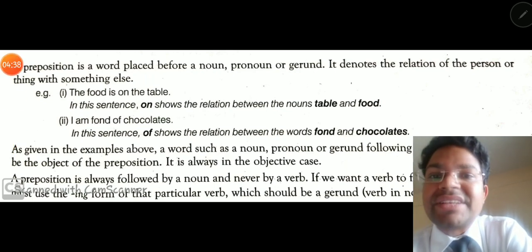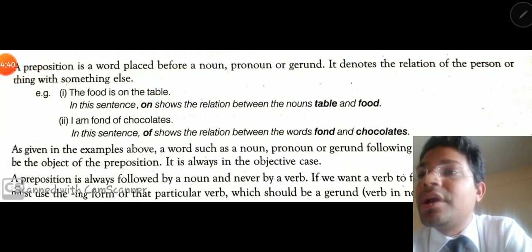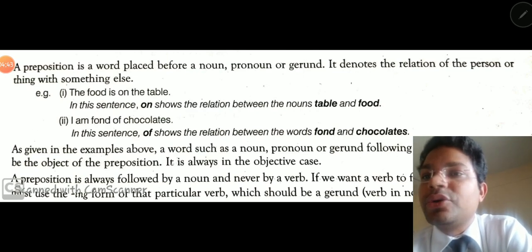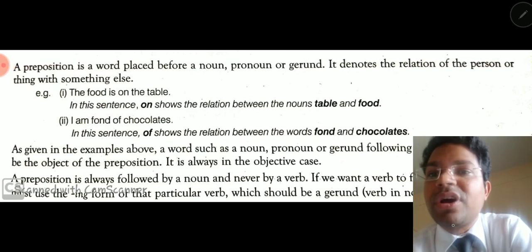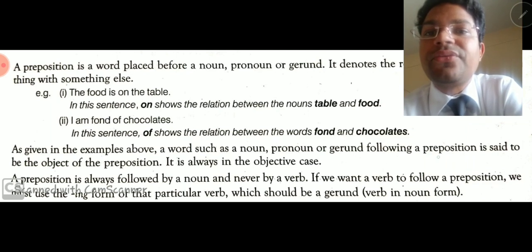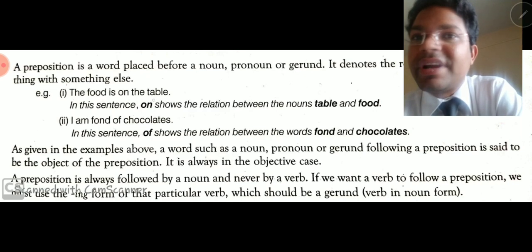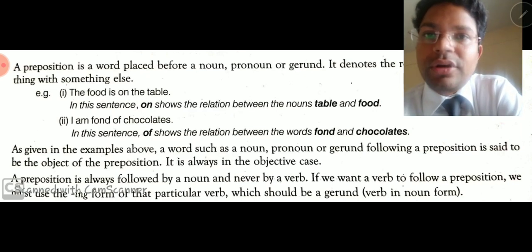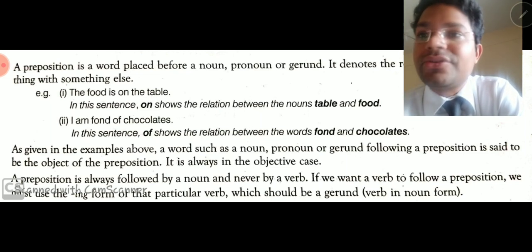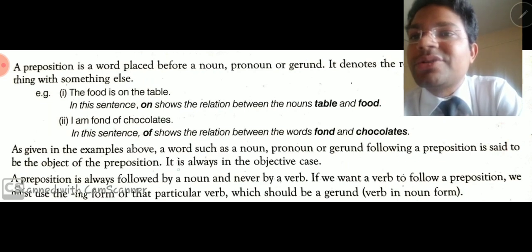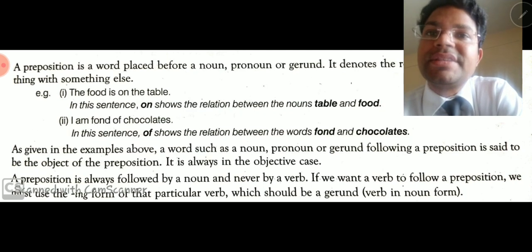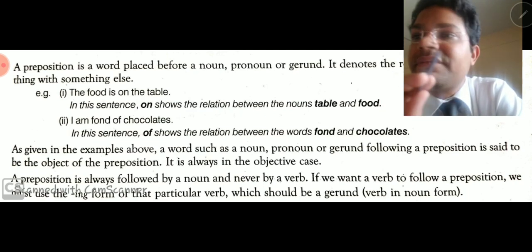Now some extra information: as given in the definition and examples above, a word such as a noun, pronoun, or gerund following a preposition is said to be the object of the preposition. So the word after the preposition is called the object of the preposition. In the first sentence, 'table' is the object; in the second sentence, 'chocolate' is the object. It is always in the objective case.